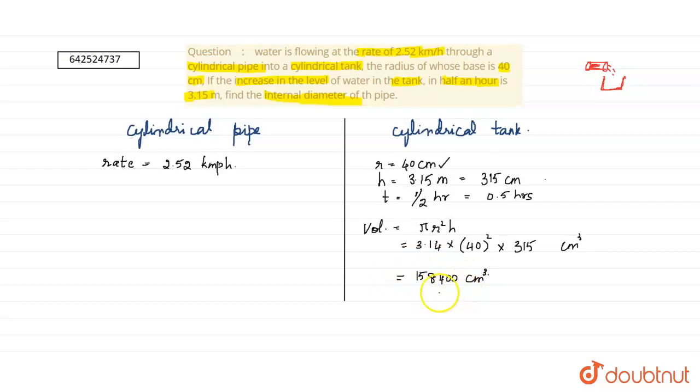This volume equals the volume of water that flowed from the cylindrical pipe. But let us calculate the length first. Length L equals speed times time. Rate is the speed here, so L equals rate times time. Time taken for filling 315 centimeters is 0.5 hours.